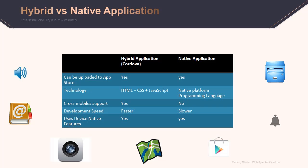Let's talk about the difference between a hybrid and native application. Both applications can be uploaded to the app store. The difference comes in the technology. In Cordova, you write code with HTML, CSS, and JavaScript. In a native Android application, you might write code in Java or C#, and for Apple iOS, you might write in Objective-C or Swift. A major difference is cross-platform support — Cordova lets you write code once and have it available across multiple devices.